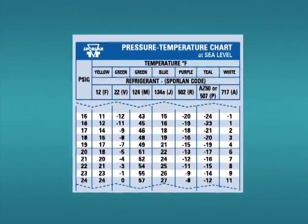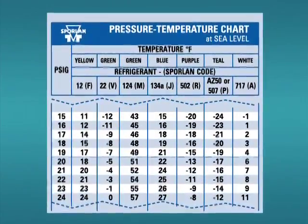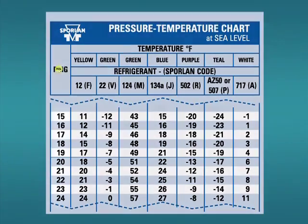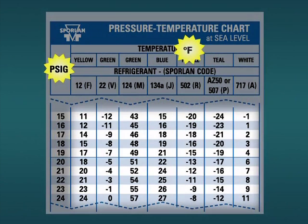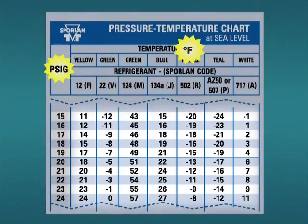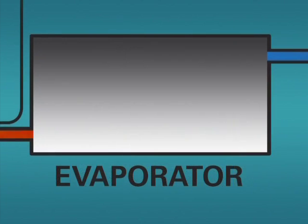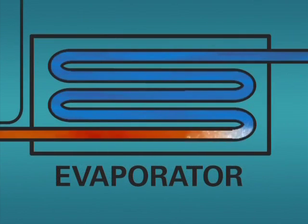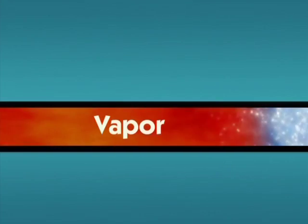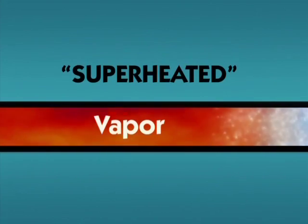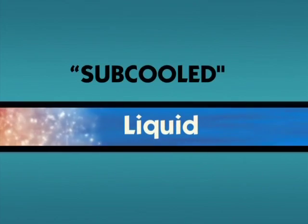The pressure temperature relationship as shown in the PT card is simply a chart listing the boiling temperatures of the refrigerant. By convention, a PT card has pressures listed on the left side of the chart and the corresponding boiling temperatures for each of the listed refrigerants on the right. Refrigerant at these conditions is referred to as saturated. Saturated refrigerant can be 100% vapor, a mixture of liquid and vapor, or 100% liquid. At temperatures above saturation, the refrigerant becomes superheated vapor. At temperatures below saturation, the refrigerant becomes subcooled liquid.